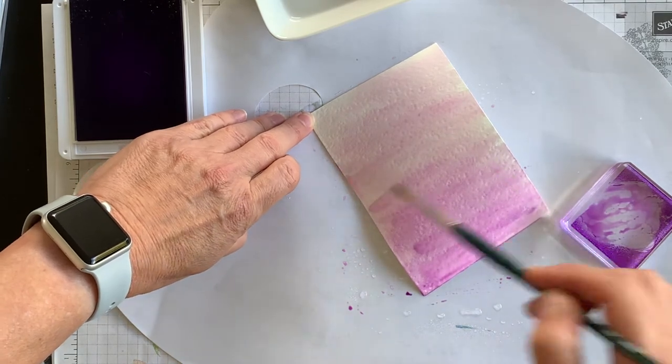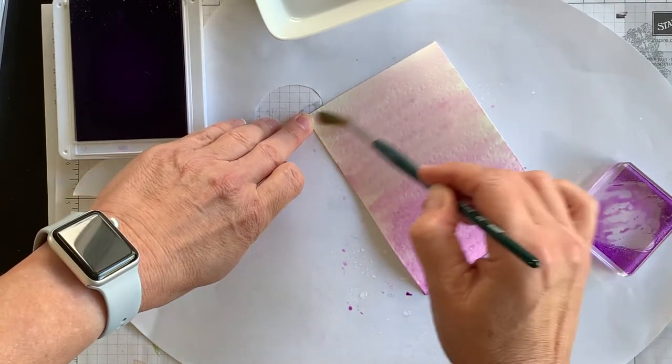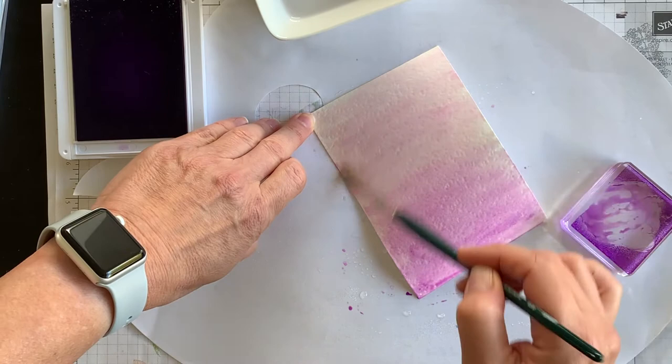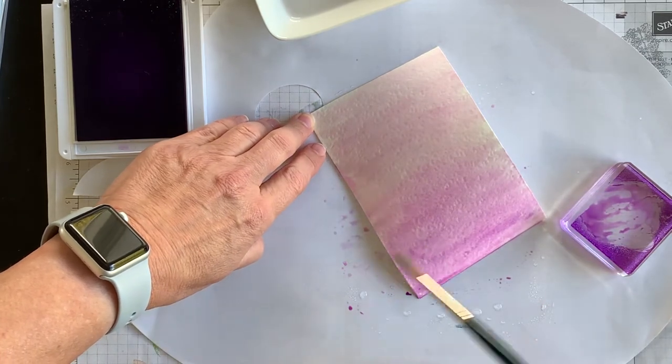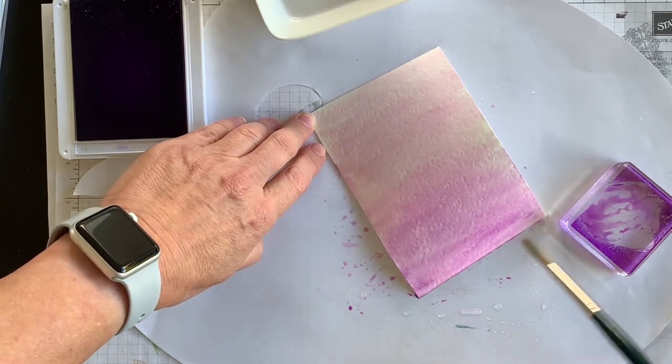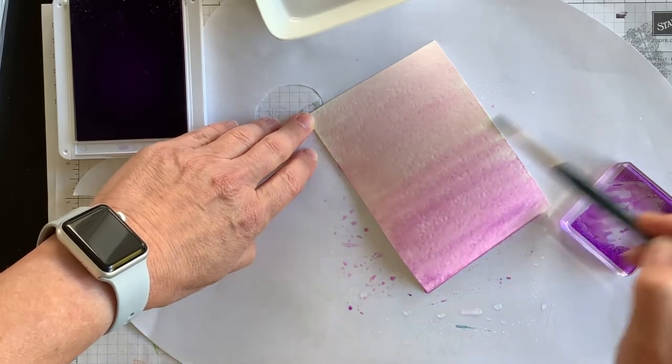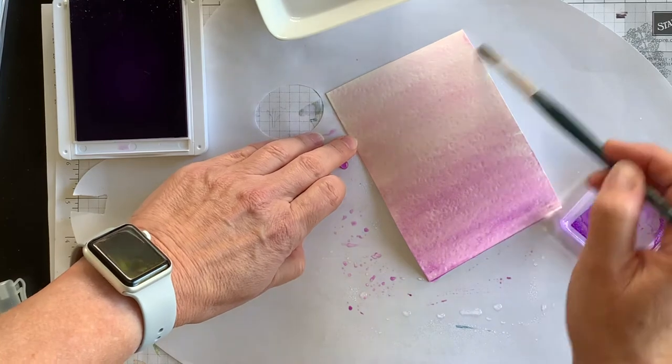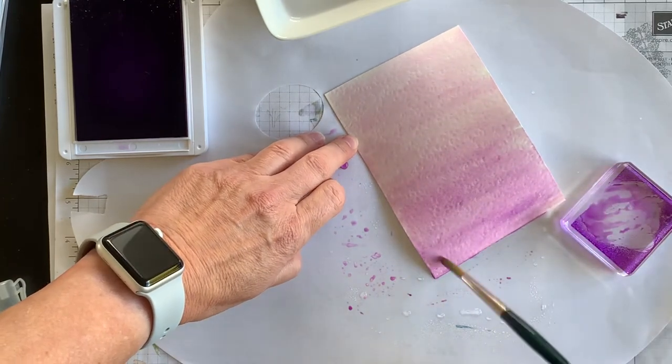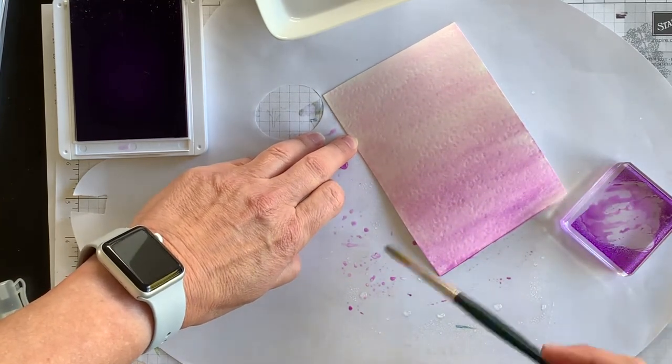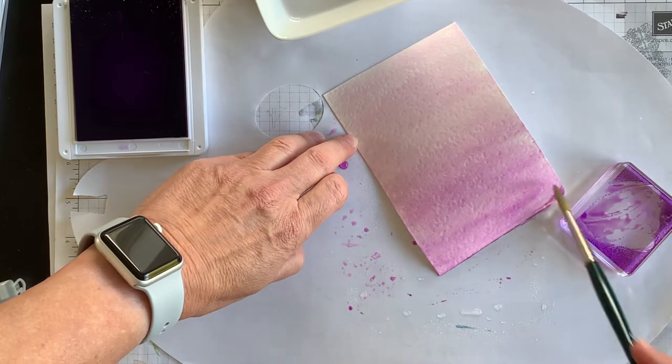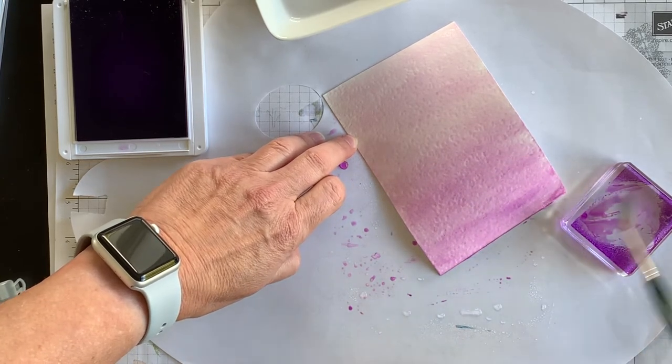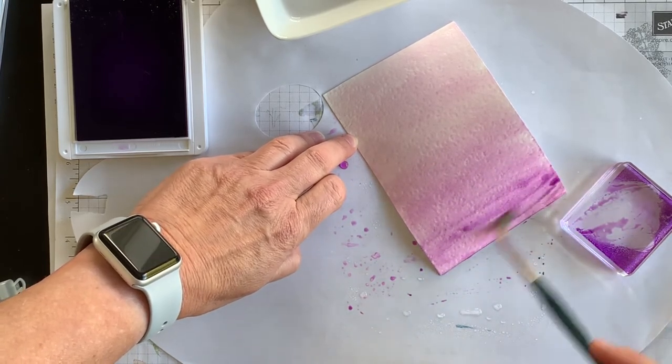Okay, so just try and go in one direction across so that you get these kind of streaks across your watercolor paper. I hope that's fairly clear to you. Again, you can go as dark as you want or as light as you want.